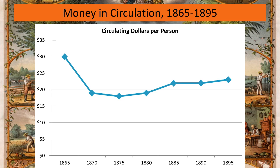That $30 is not worth as much as 1870 dollars. In 1870 there's less than $20 per person floating around the economy, but each of those dollars is worth more because there are fewer of them.